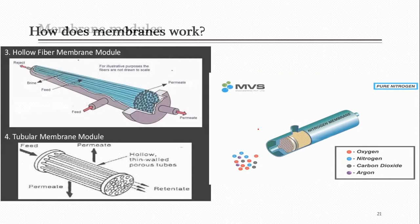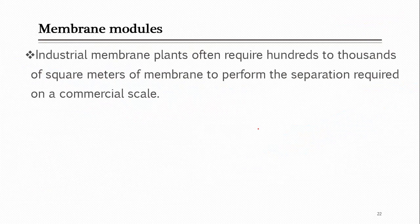What are membrane modules? On a large scale, industrial-scale membranes require large areas. Recall the industrial example we discussed last week — the benzene synthesis from toluene plant had four parallel membrane modules, each with an area of about 4000 square feet, requiring a total area of 16,000 square feet. Industrial plants need from 100 to 1000 square meters of membrane area.